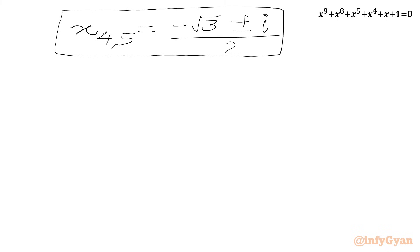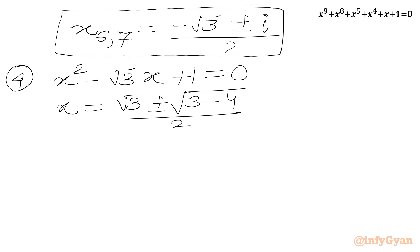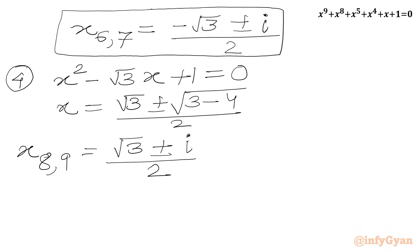Now we solve the fourth equation: x squared minus root 3 x plus 1 equal to 0. Applying the quadratic formula, minus b gives plus root 3, plus or minus square root of (3 minus 4) over 2, giving root 3 plus or minus i over 2. Here we write x₈ and x₉. Again we are getting complex roots.